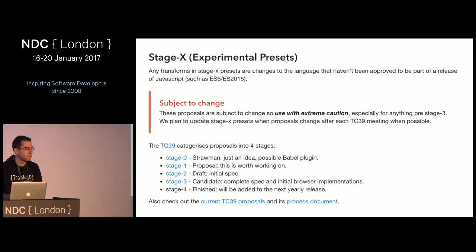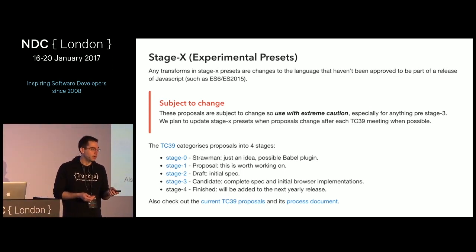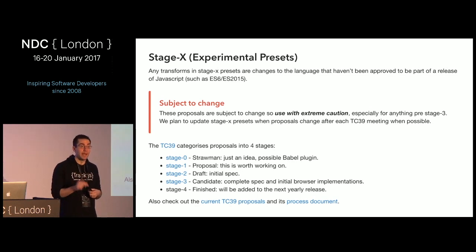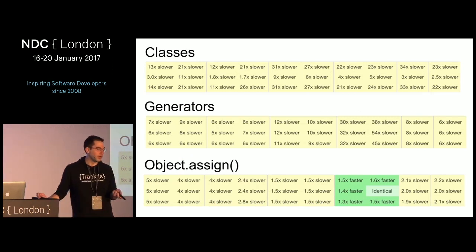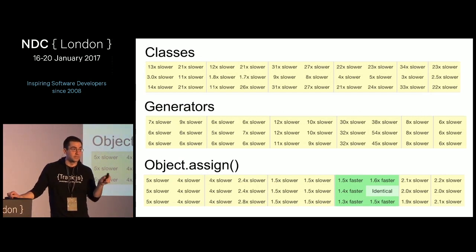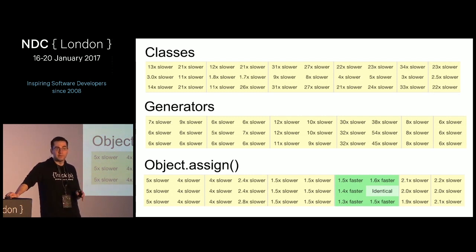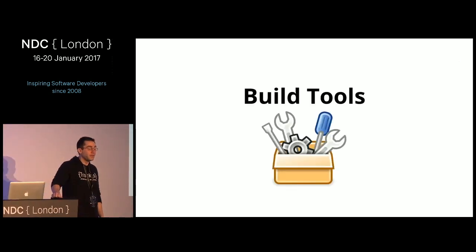Babel also has Stage X presets — experimental features that are subject to change. I see a lot of companies using stage-zero Babel presets, which causes all kinds of issues. Transpilation can also be slower: according to sixspeed.github.io, classes can be 23-27 times slower with transpilation, generators are quite a lot slower, and object assign is still slower in some cases. Normally it's fast enough, but it's something to consider.